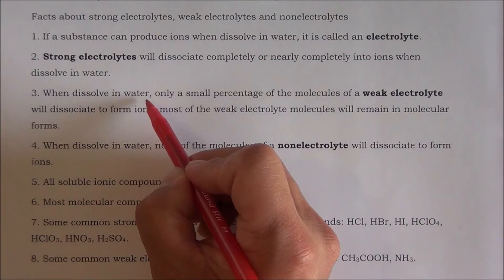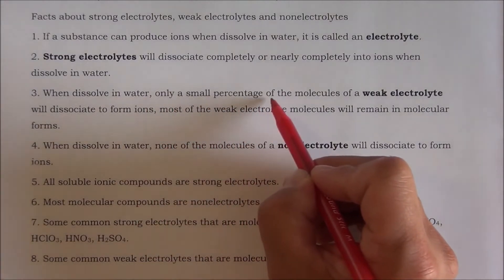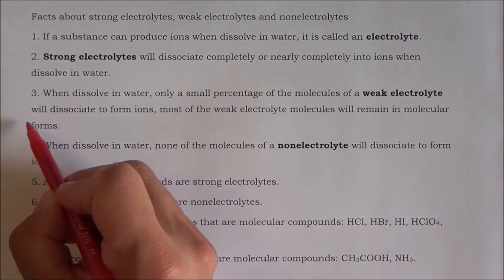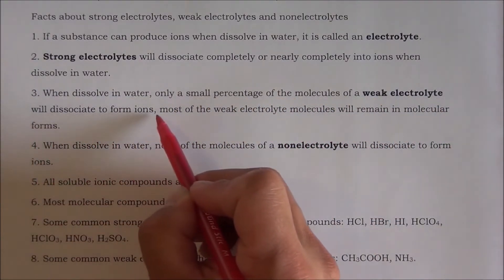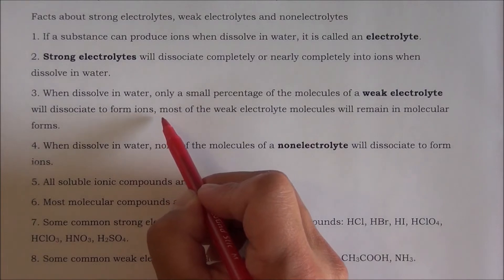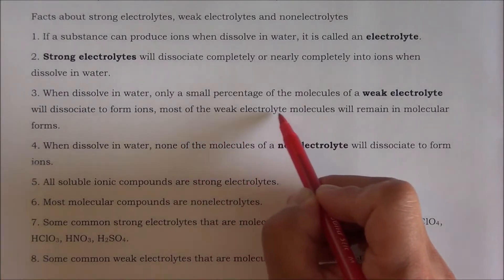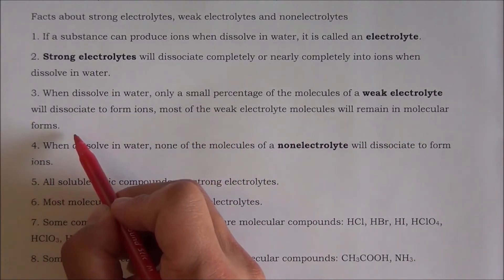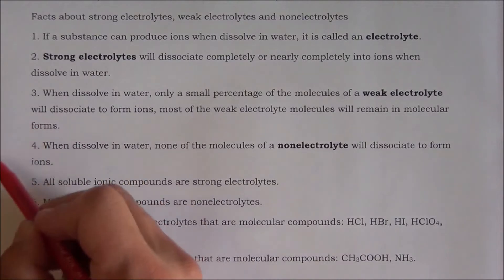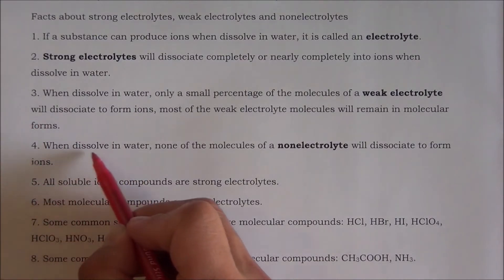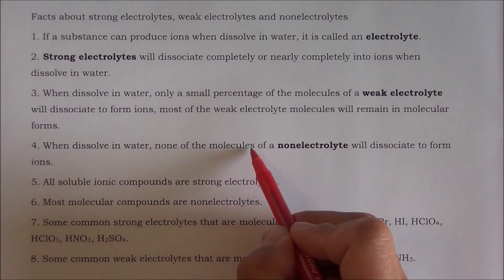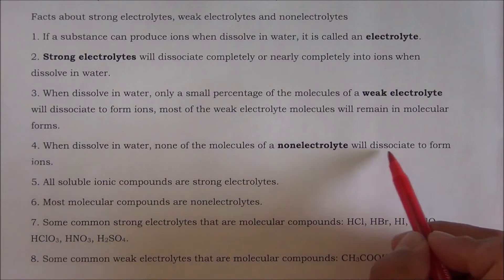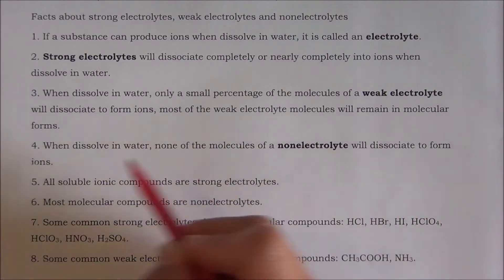Number three: when dissolved in water, only a small percentage of the molecules of a weak electrolyte will dissociate to form ions. Most of the weak electrolyte molecules will remain in molecular form. Number four: when dissolved in water, none of the molecules of a non-electrolyte will dissociate to form ions.